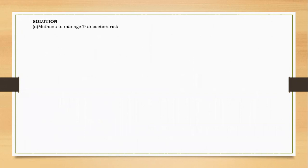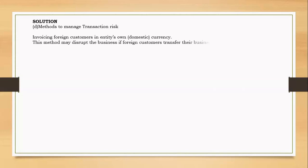One internal method is to invoice foreign customers in your domestic currency. For example, if you are in the US using US dollars and you sell to a UK customer, instead of invoicing them in pounds, you invoice in US dollars. In that way, you don't need to worry about movement in exchange rates. However, this may be difficult if a competitor invoices customers in the foreign currency, especially when their currency is weaker than yours.